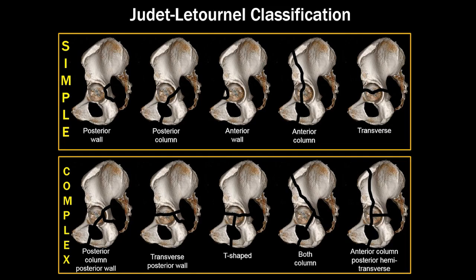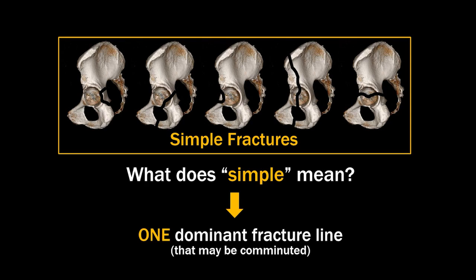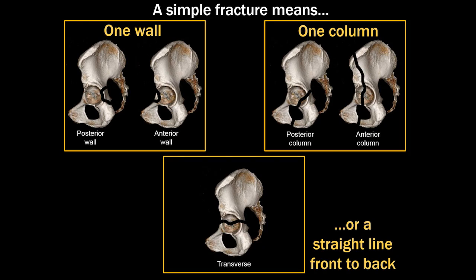The classification system is divided into two categories: simple fracture types along the top and complex ones along the bottom. Simple means the patient has one dominant fracture line that may be a little comminuted. The simple fracture types include one wall — anterior or posterior — one column — anterior or posterior — or a straight line from front to back.